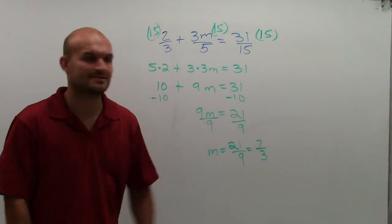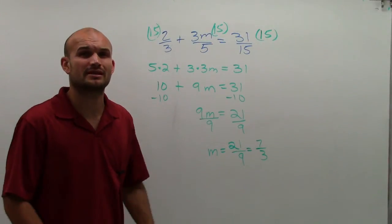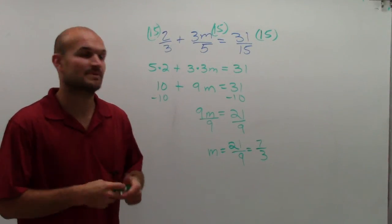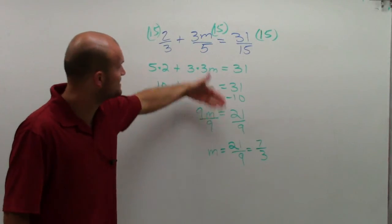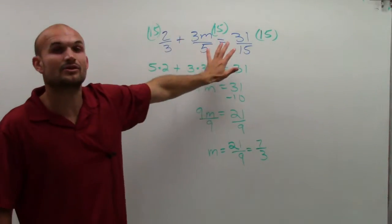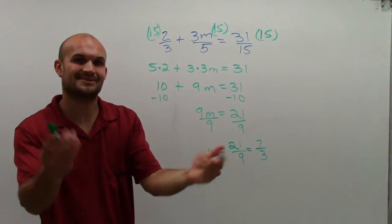Which we could put as a decimal, but I prefer to leave it as a fraction. So that's how I'm going to answer my question. The solution of m is 7/3. That means when m is equal to 7/3, this equation is true. Thank you.